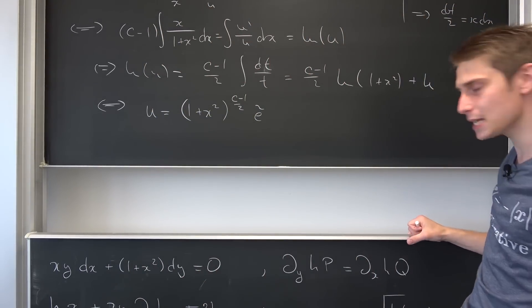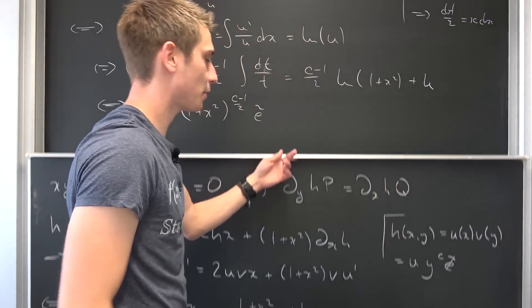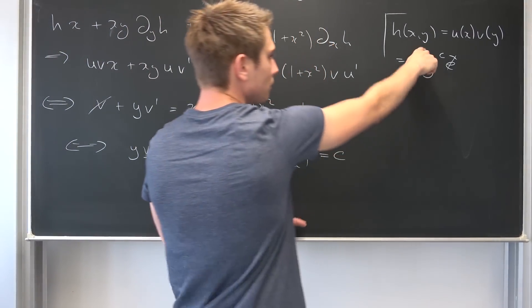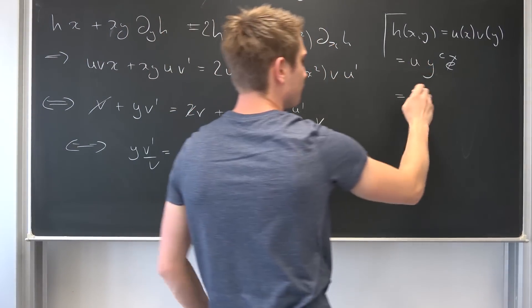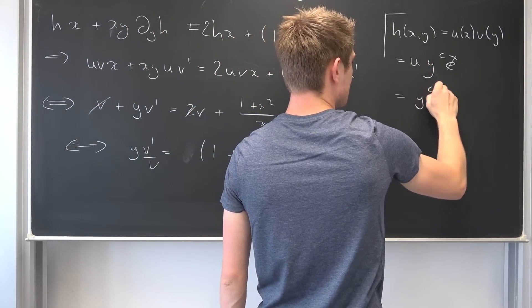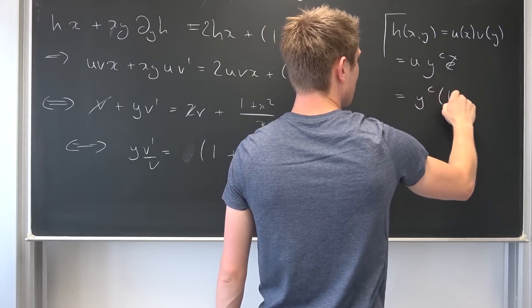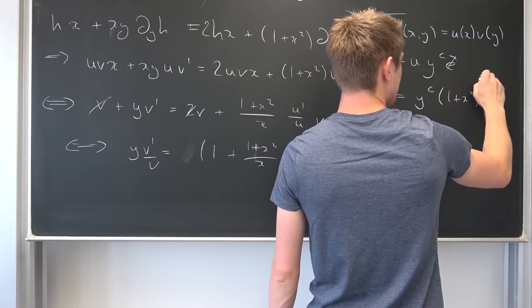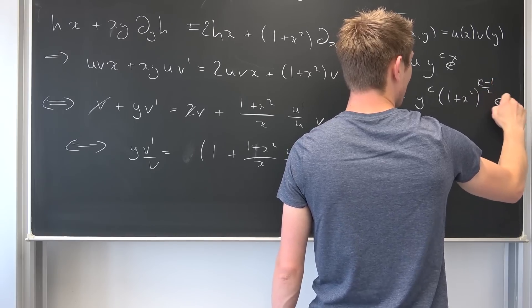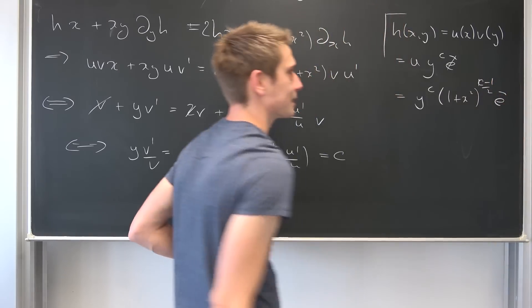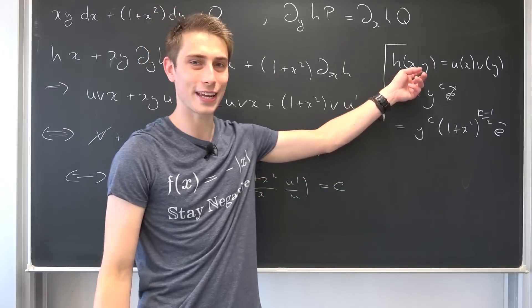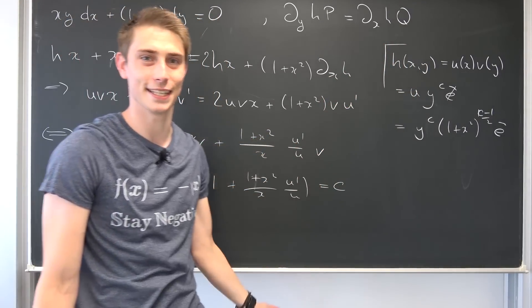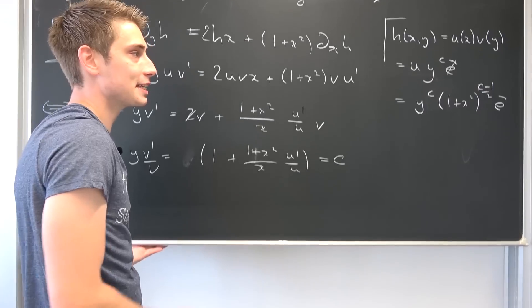We've done it! We have found our h. Our integrating factor is h equals y to the c power times (1 + x²) to the (c minus 1)/2 power times e_snack. Isn't that pretty fancy?